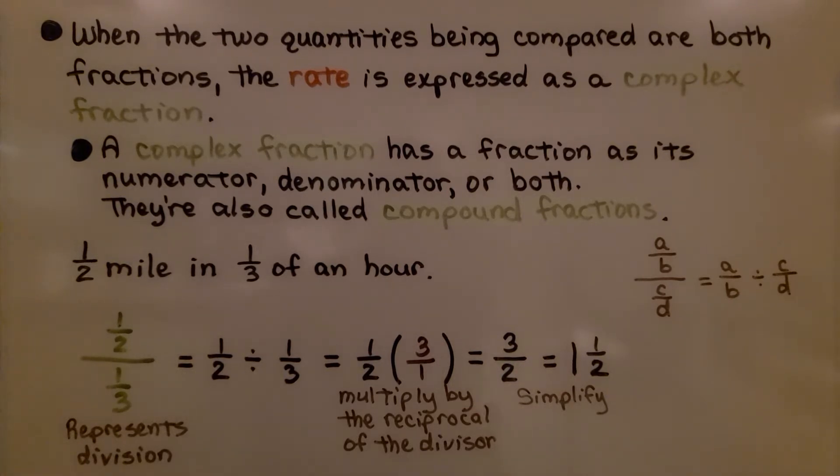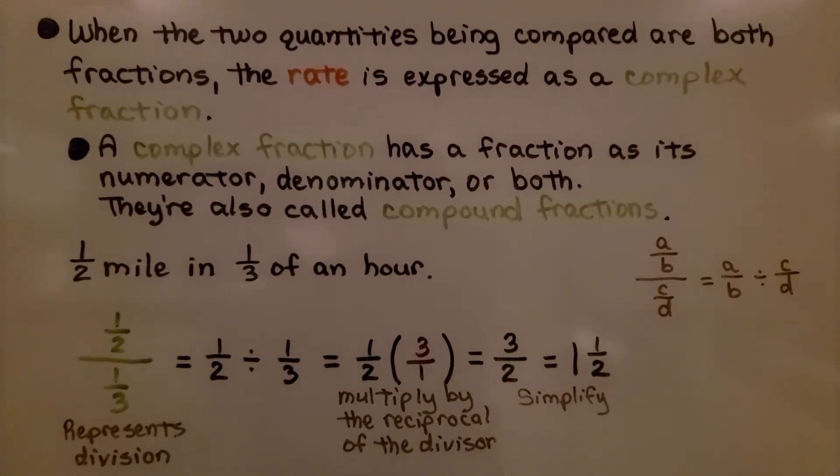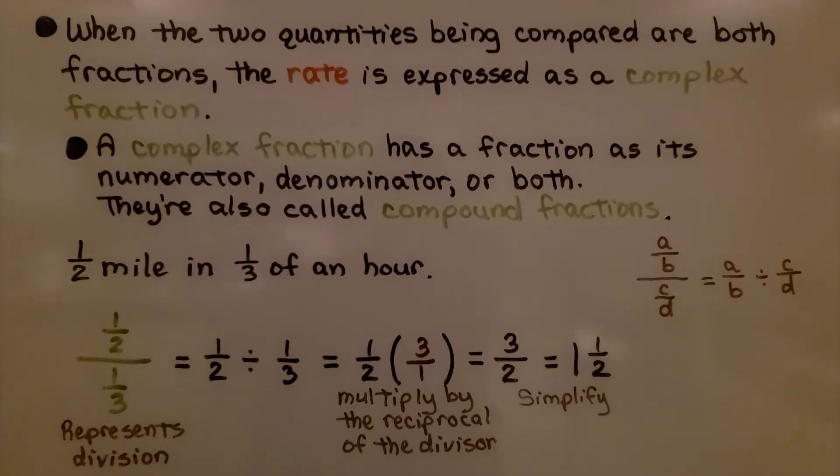When the two quantities being compared are both fractions, the rate is expressed as a complex fraction. A complex fraction has a fraction as its numerator, denominator, or both. They're also called compound fractions. This is a complex fraction. It has a fraction for its numerator and denominator. We know this represents division, a fraction. So we have one half divided by one third.